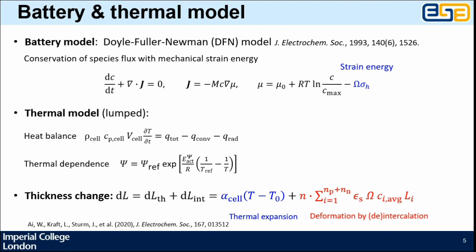The thermal model is based on the heat balance, where the cell temperature is determined by the reaction heat and the reversible heat minus the convection and radiation heat. Electrode materials all show thermal dependence, where the Arrhenius law is used to describe this thermal dependence. And the thickness of the pouch cell is modeled by contributions from thermal expansion and deformation by intercalation.